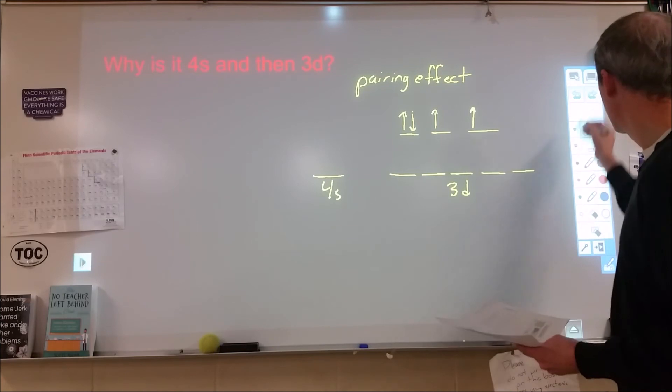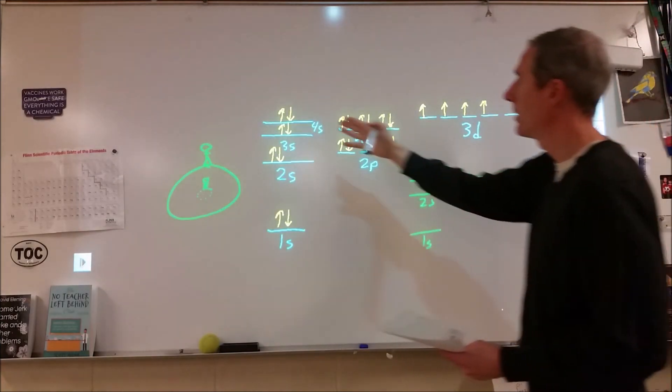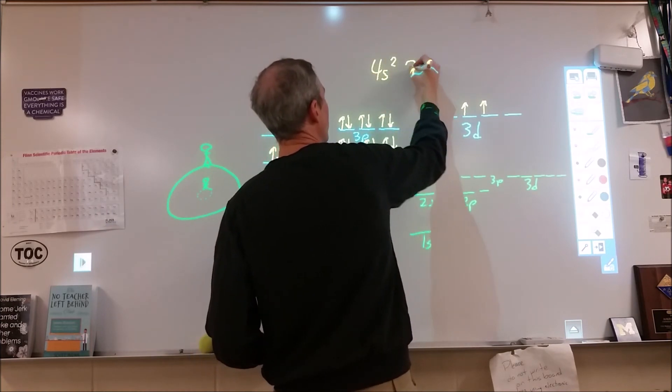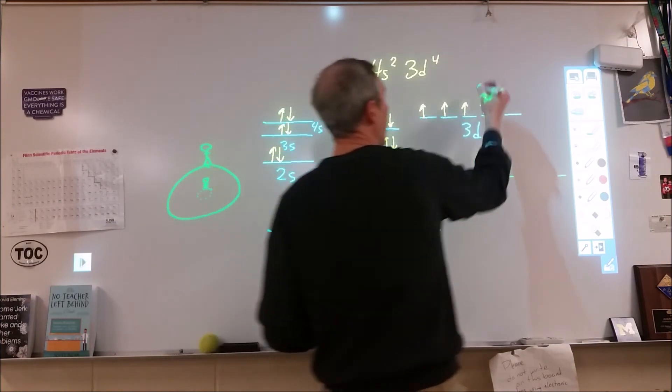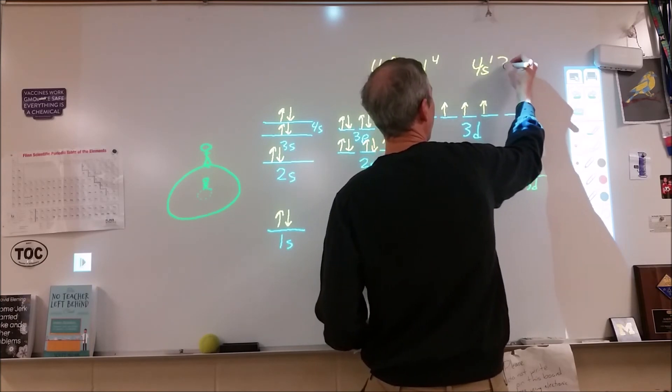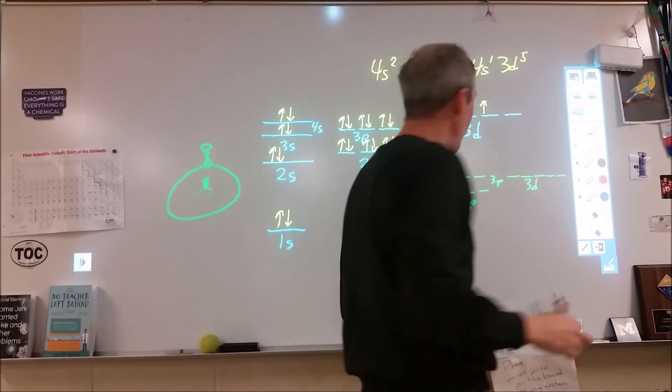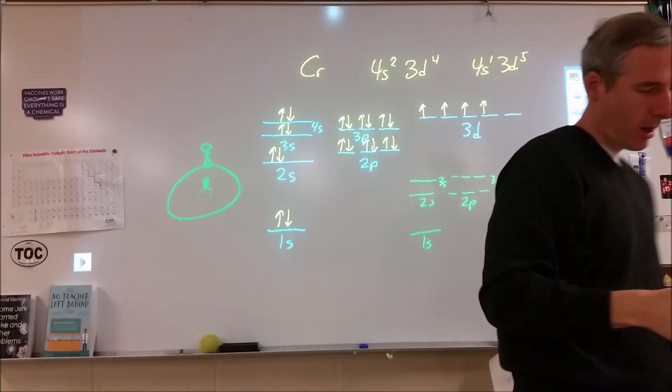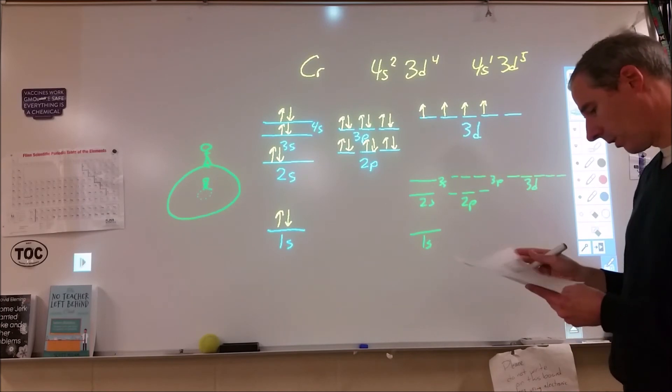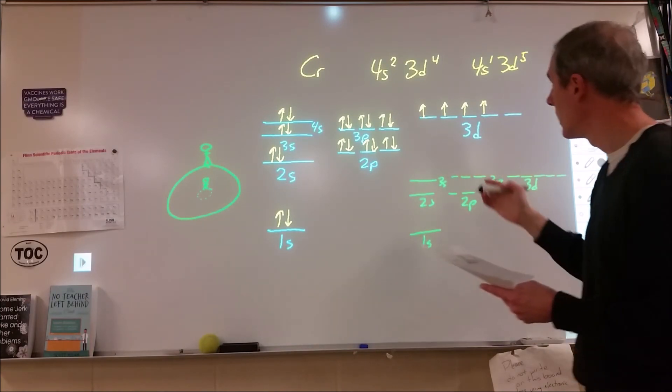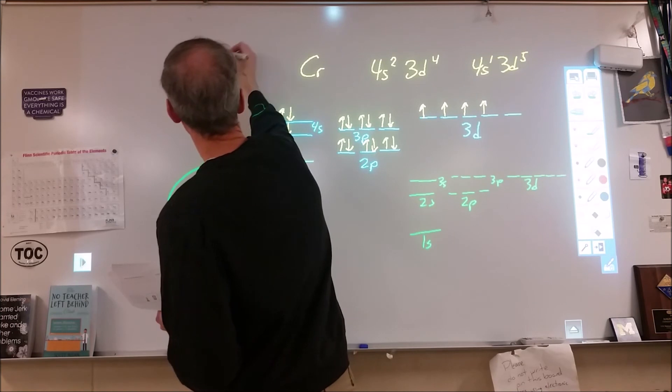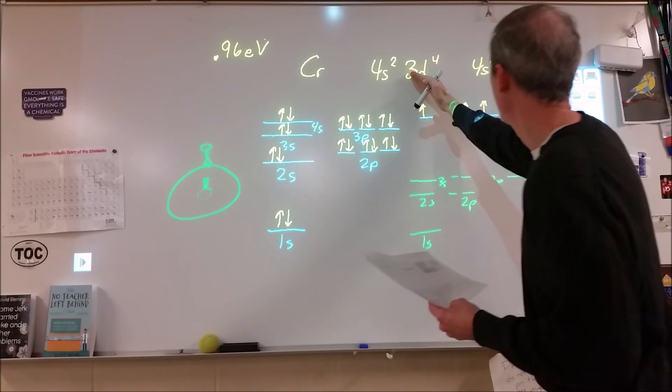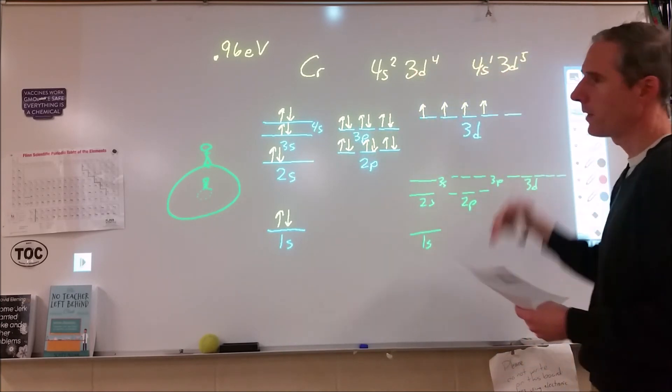In fact, so I think I have drawn over here, I have the chromium configuration, but this is not how we would typically write it. So 4s2 3d4 is what I have drawn here. And you've probably been told correctly that 4s1 3d5 is the more appropriate electron configuration for chromium, for the valence electrons at least. And the difference between this is very subtle. This is a 0.96 electron volt difference between the 4s2 3d4 configuration and the 4s1 3d5 configuration.